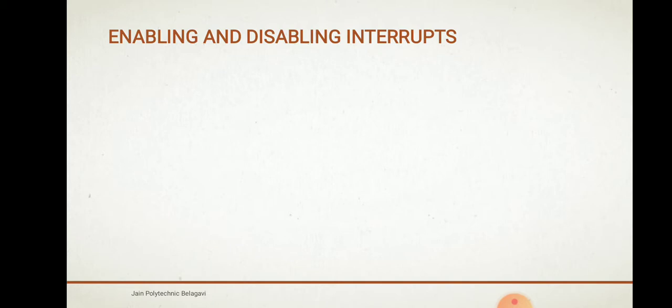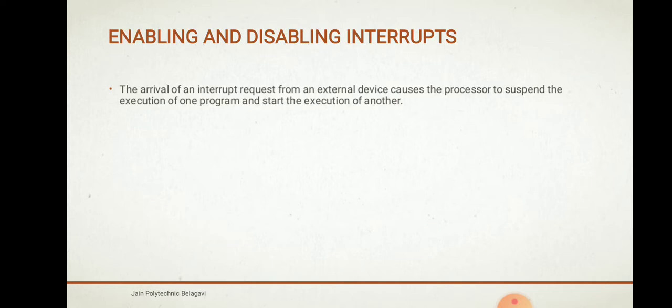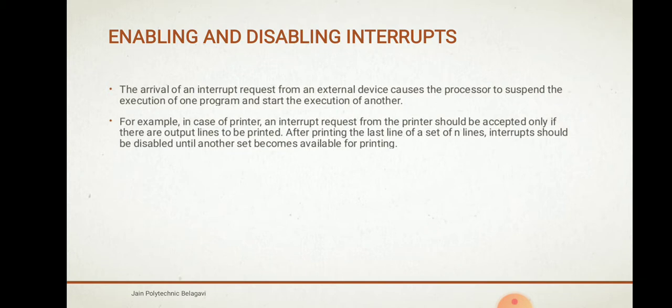Now we will see how to enable and disable interrupts. The arrival of an interrupt request from an external device causes the processor to suspend the execution of the current program and start the execution of another — specifically, the interrupt service routine. For example, in the case of a printer, an interrupt request from the printer should be accepted only if there are output lines to be printed. Suppose you are printing a document and an interrupt request comes from the printer.